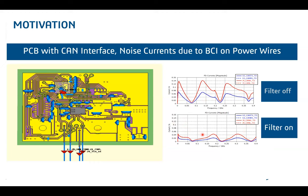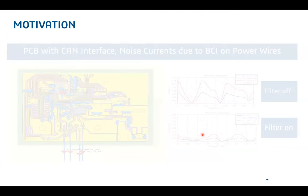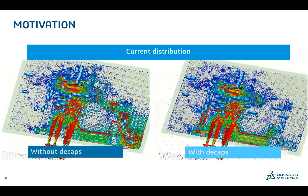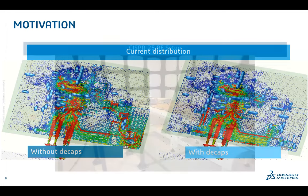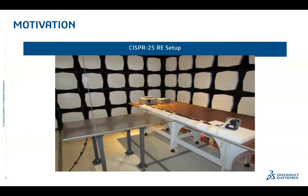In addition, simulation gives you far more information — you can set up monitors to see the current flowing through your entire circuit. This level of field and current visualization is something an actual test would not provide. In an actual measurement test, you can only see whether your circuit has passed or failed, but simulation can help you understand much more detail.